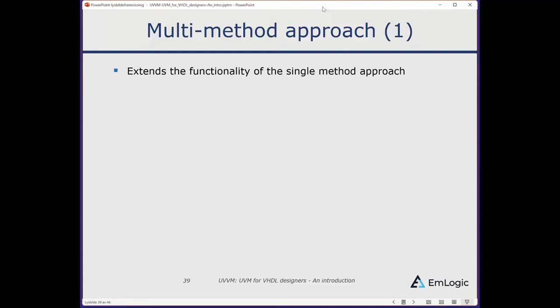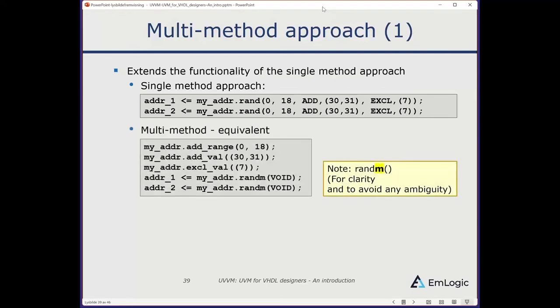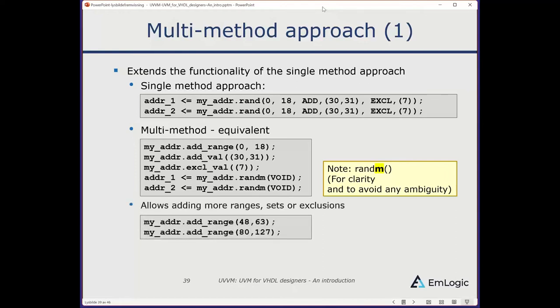In addition to the single-method approach, there's a multi-method approach that extends functionality. If you want to generate two different addresses using the single method you repeat the command. With the multi-method equivalent, you build up an object step by step — add range, add value, exclude value — and once built, use that object to generate address 1 and address 2. This is more object-oriented. You can also add more ranges, more sets, more exclusions, and future extensions are possible.